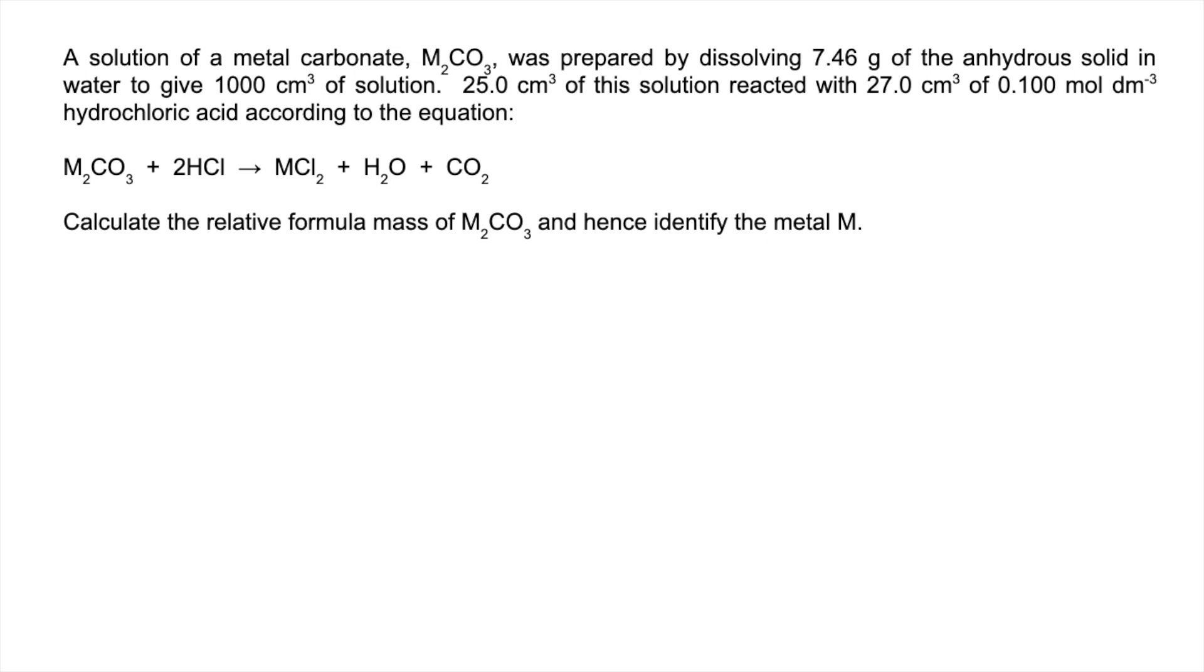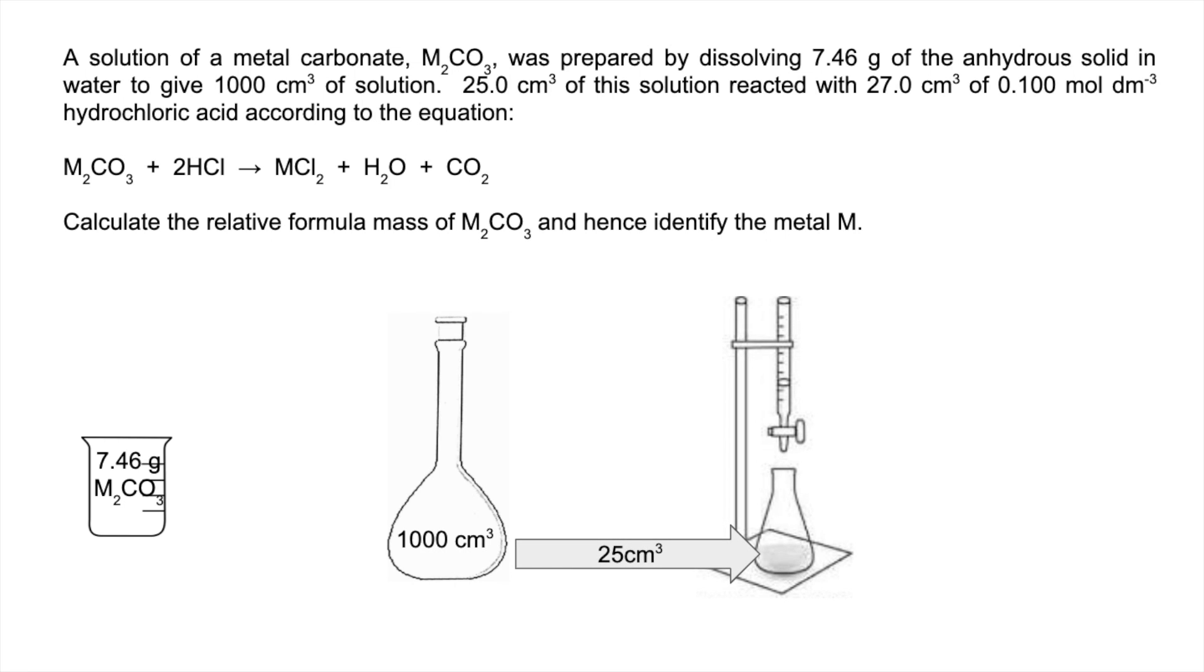It's always a really good idea to just do a little sketch of the process. I would encourage my students to draw simple diagrams so you can visualize what's happening. We've got 7.46 grams of the carbonate dissolved into a thousand cm³, and then a 25 cm³ portion of that is transferred into the conical flask and the titration's been carried out.